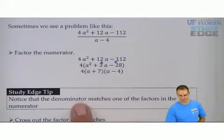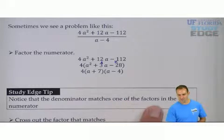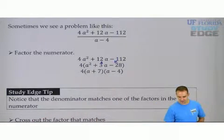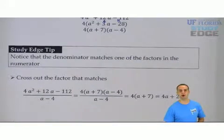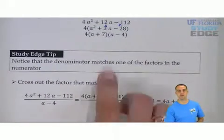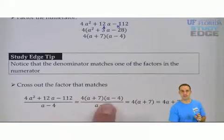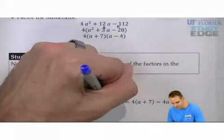You need to notice that the denominator matches one of the factors in the numerator, the a minus 4 and the a minus 4. So what actually happens overall is after you factor a little bit off to the side, notice that was factoring basically without the denominator. You put it back in, and the a minus 4 simplify.